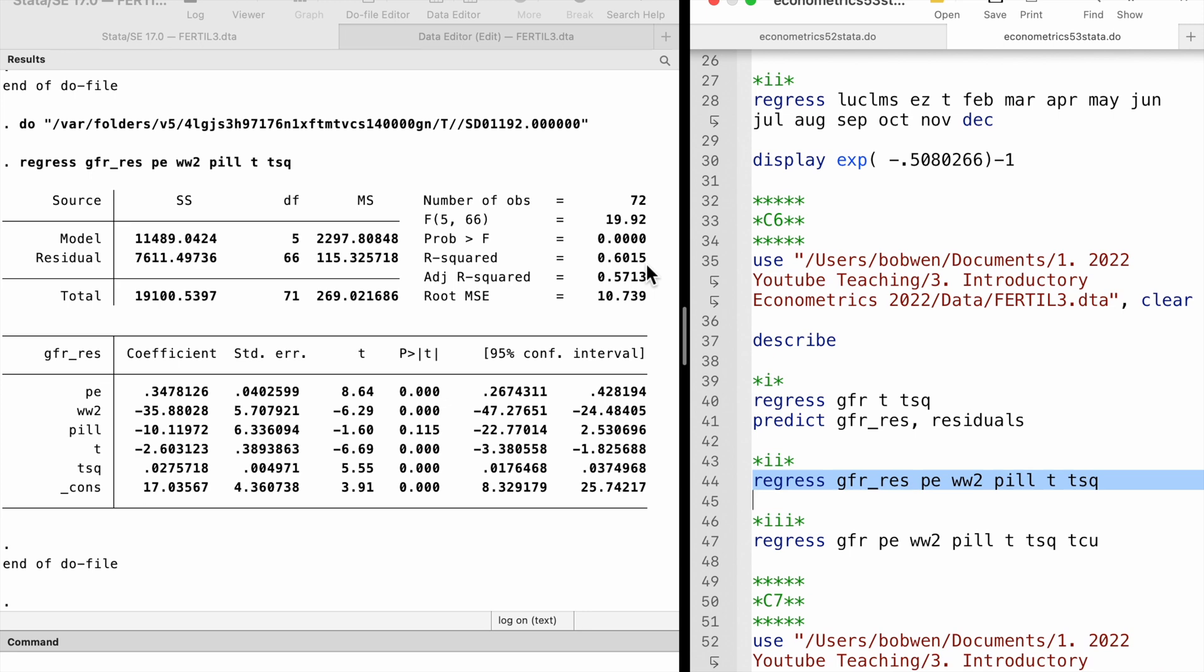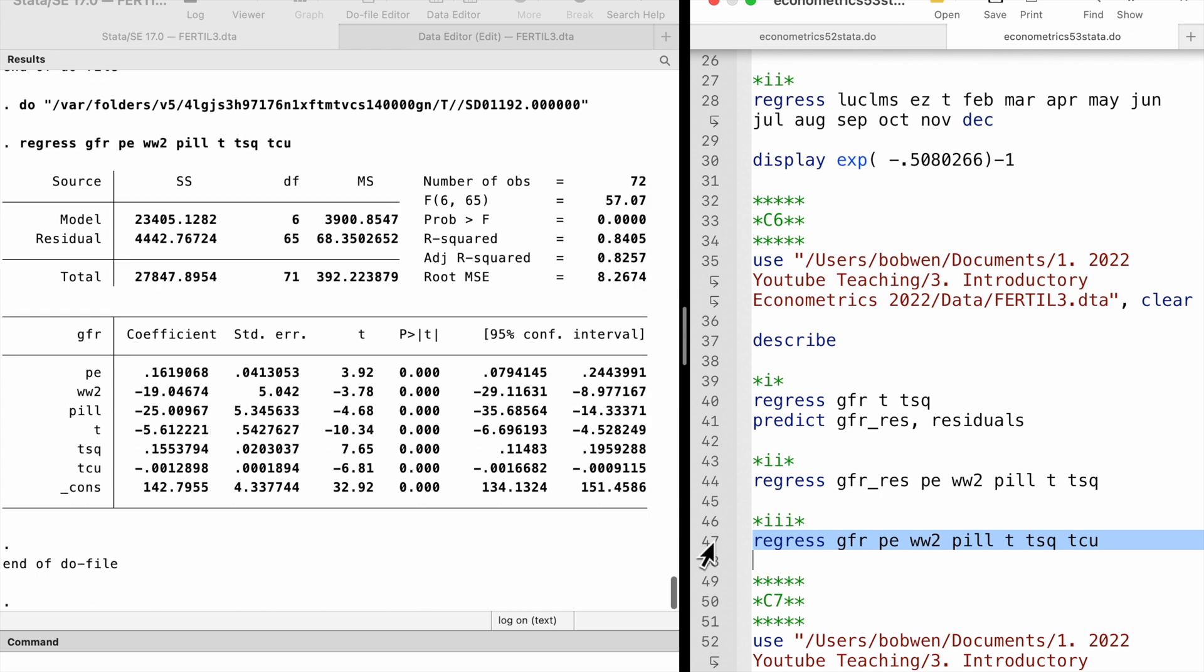In part 2, we add the cubic term of t to the model. It is statistically significant at the 1% level with a t statistic of minus 6.81. As mentioned in the textbook, we have to be careful not to include too many polynomial terms to capture the movements in the outcome variable that should be explained by the explanatory variables in the model.